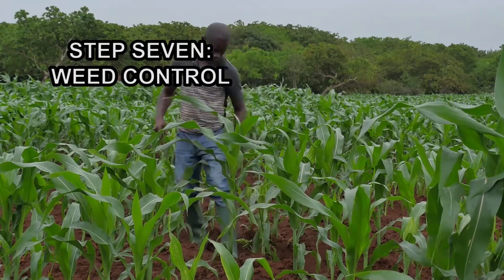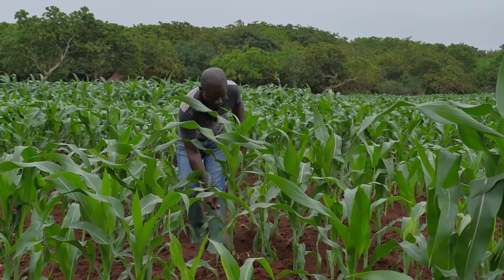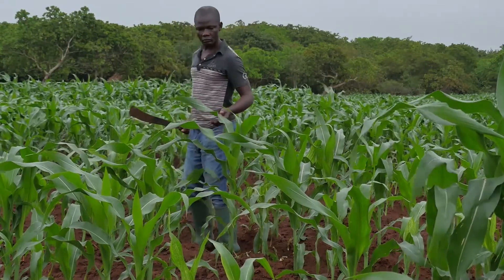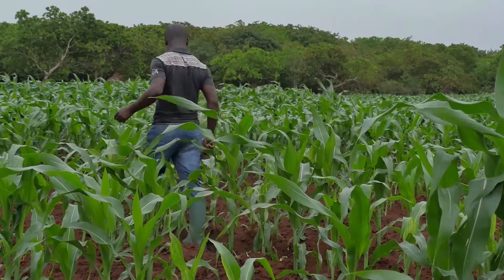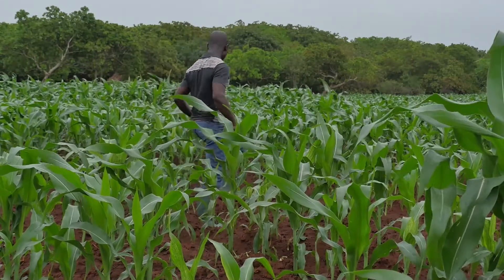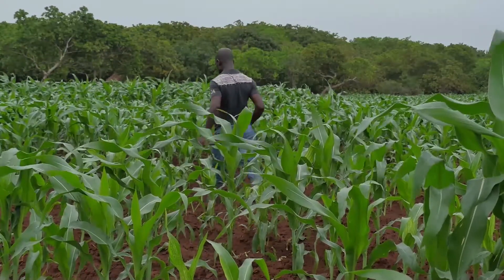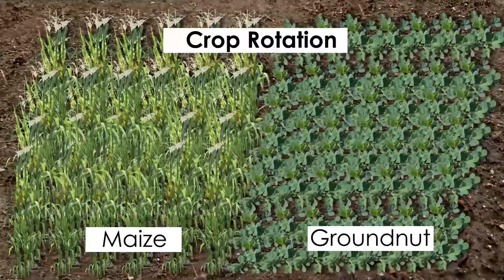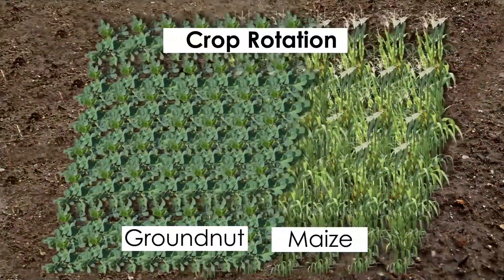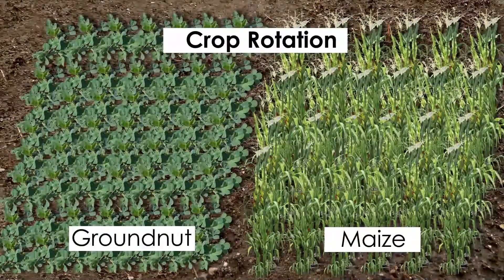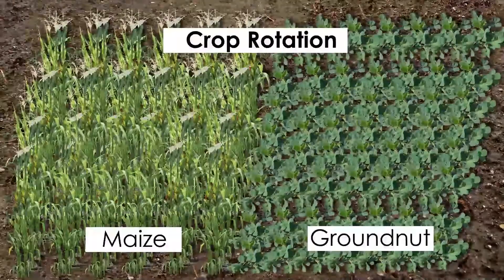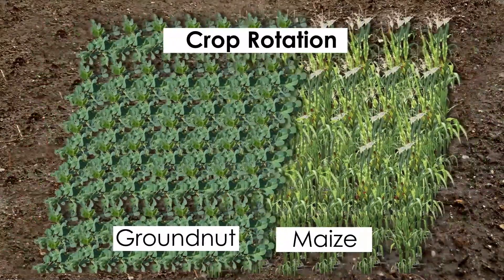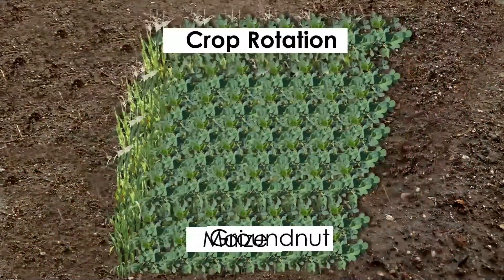Step 7: Weed control. Weeds compete with the maize plant for water, nutrients, space, and light. The early stage of a maize plant — the first 3 weeks — is very sensitive to weed competition. Methods of weed control include crop rotation: rotating maize with leguminous crops such as cowpea will help reduce striga in the fields.